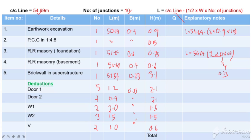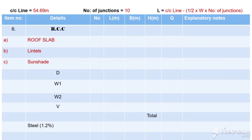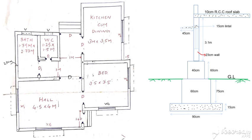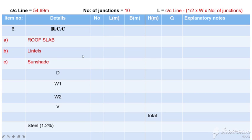Now we have the reinforced cement concrete, RCC quantity. RCC is in the roof slab, lintel, and sunshade — in these three portions. So we work out the roof slab quantity.